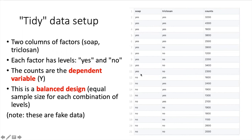The four combinations are: SOAP yes / Triclosan yes, SOAP yes / Triclosan no, SOAP no / Triclosan yes, and SOAP no / Triclosan no. The counts column is the dependent variable, or Y.